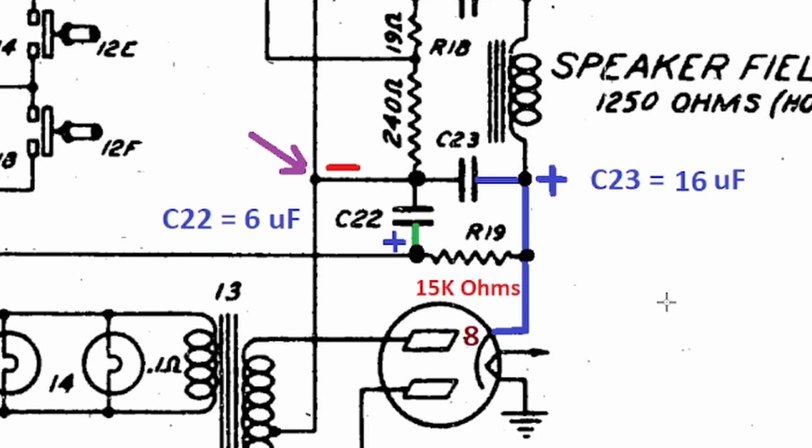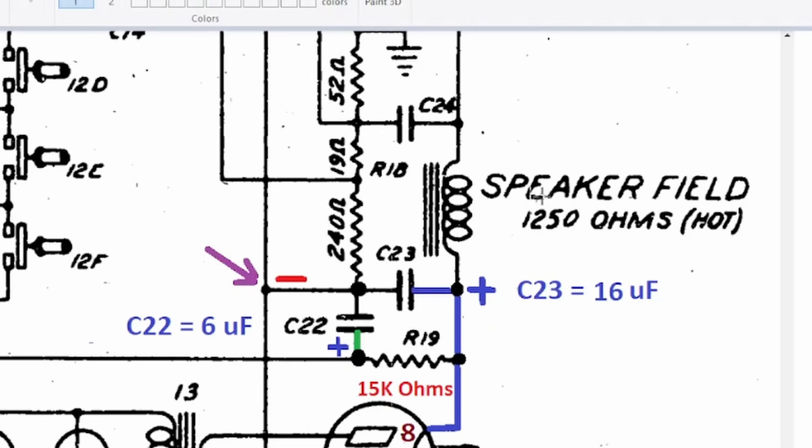By doing this, it makes my job much easier, especially for those of you without electronic background. I highly suggest doing this first. You're going to get more comfortable reading a schematic, and you'll make fewer mistakes. Now let's focus on C24, which is another electrolytic capacitor, 16 microfarad.